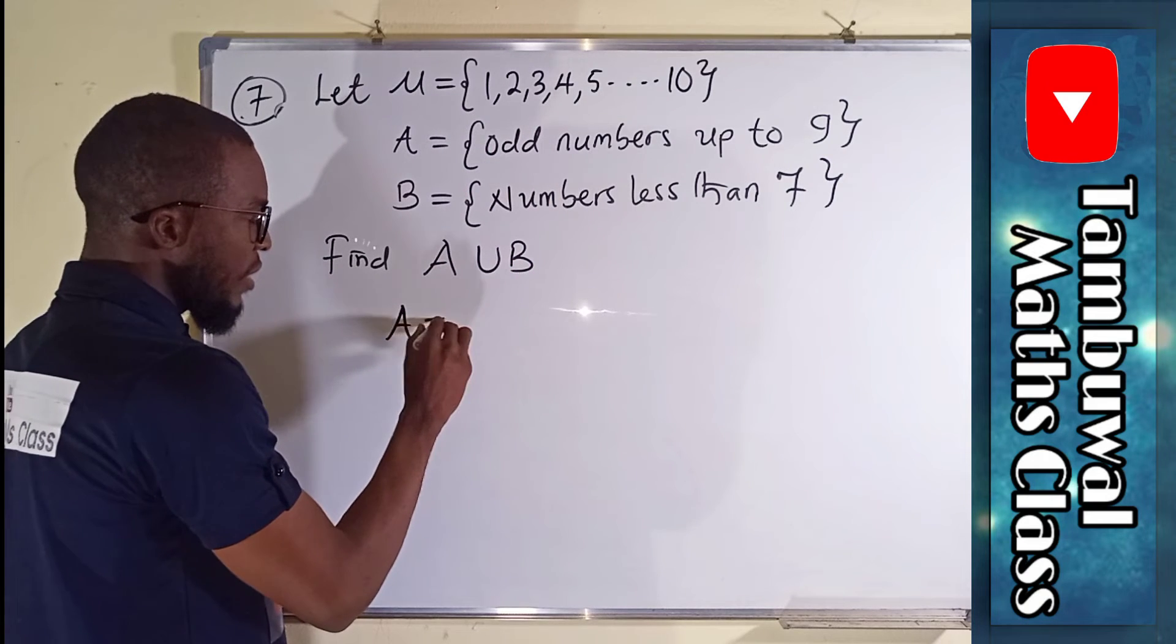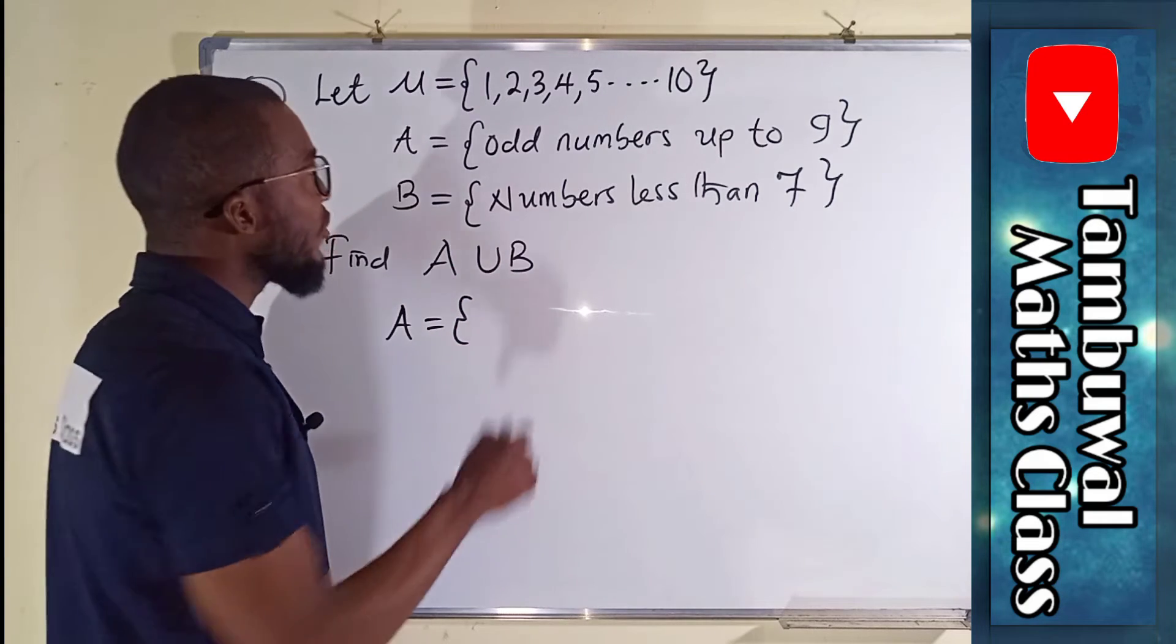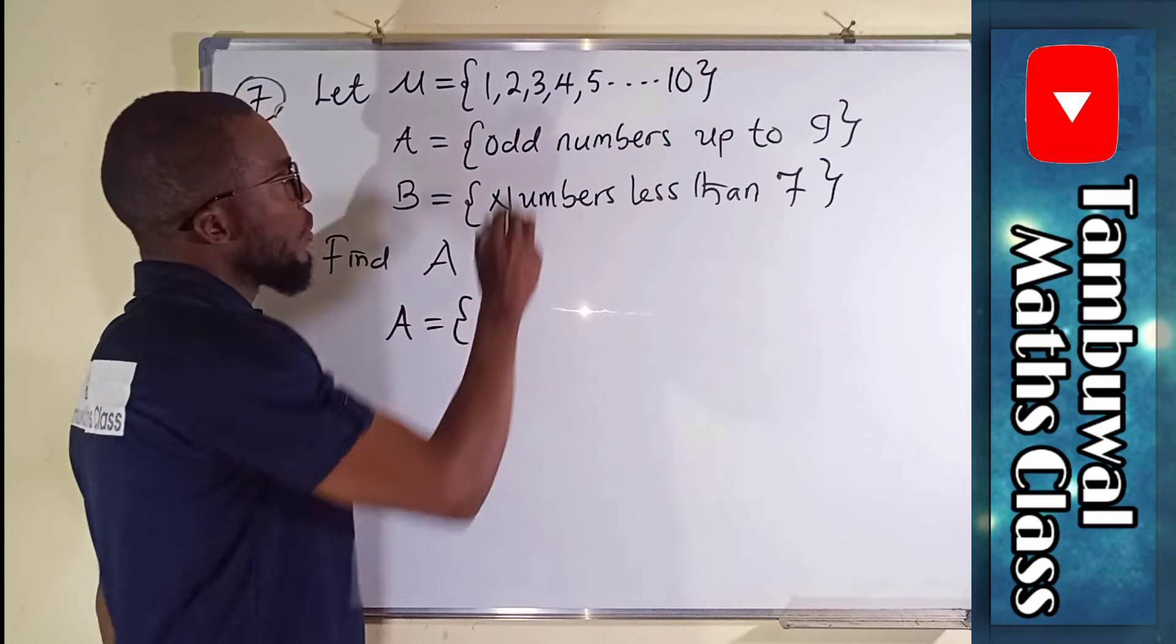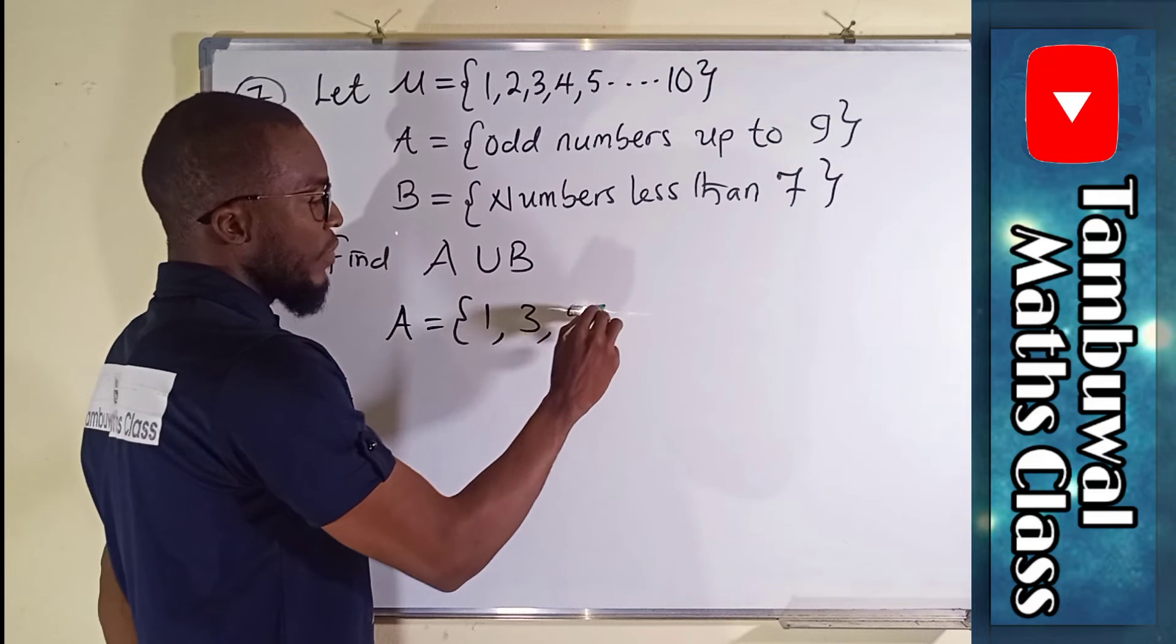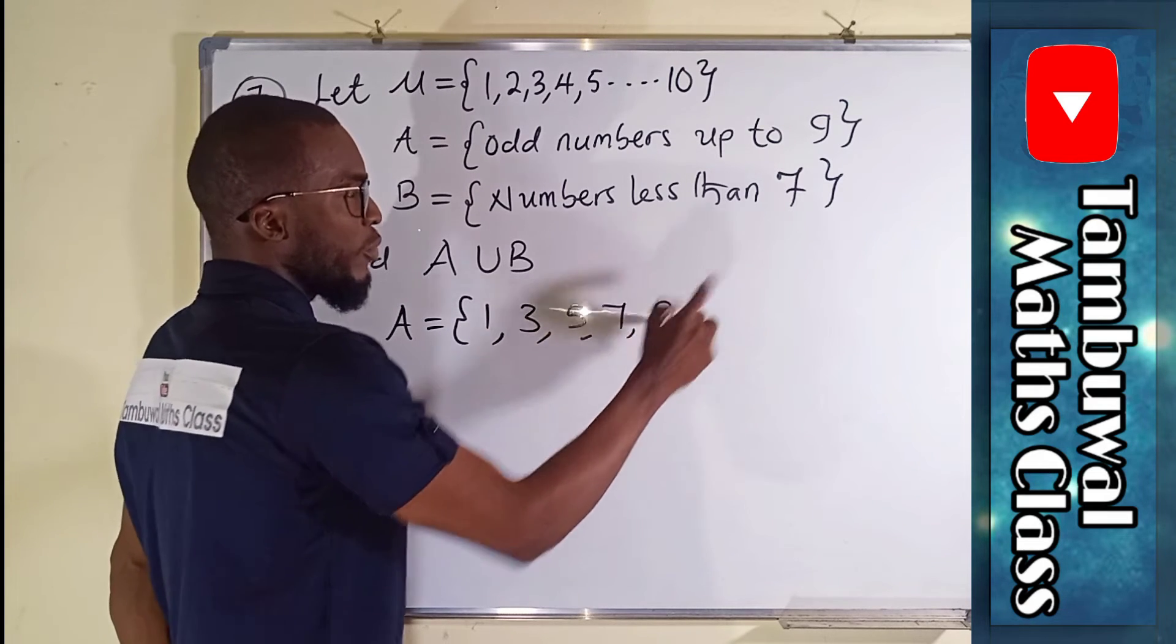We cannot do that without obtaining these two sets. So solution: A is a set of odd numbers that are not divisible by two. You see we have one here.